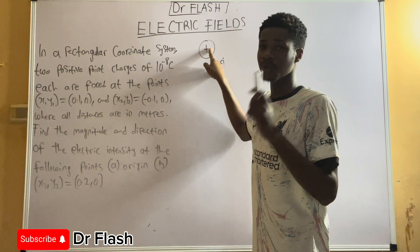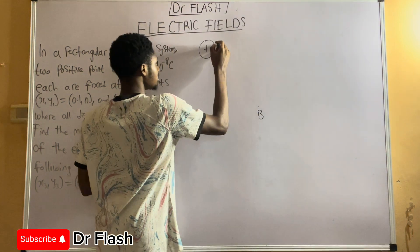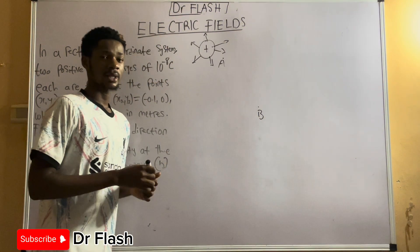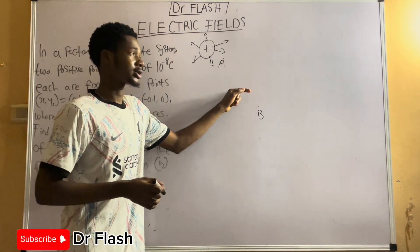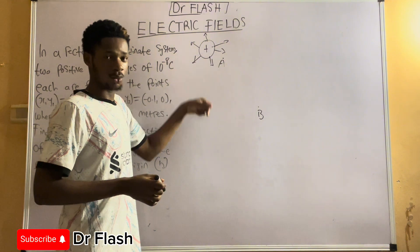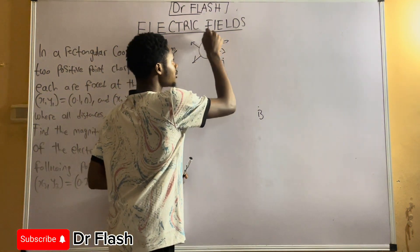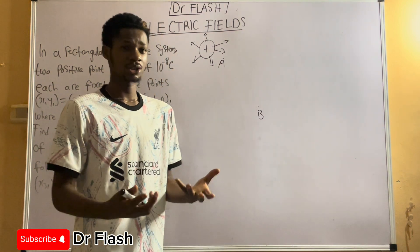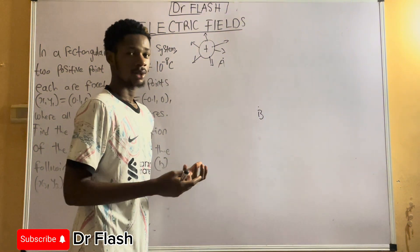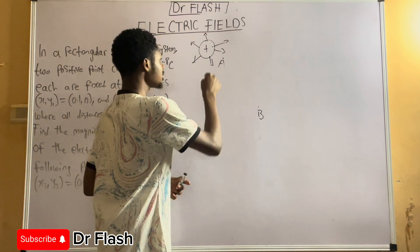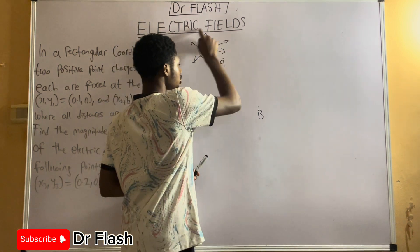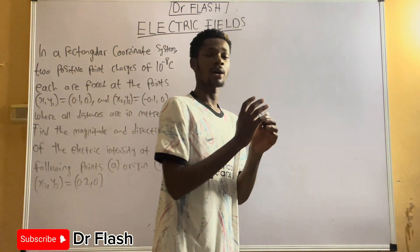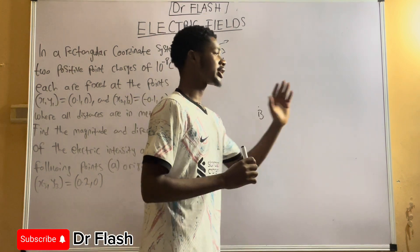An electric charge has imaginary lines around it, and those imaginary lines are called electric flux. For a positive charge, the electric flux is directed outward. Anywhere these imaginary lines touch is what we call the electric field, but we can't actually measure how long they are since they are imaginary — we can only show that they exist by doing various experiments. The electric field has a strength or intensity that increases or decreases depending on how far you are from the charge.